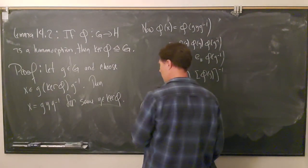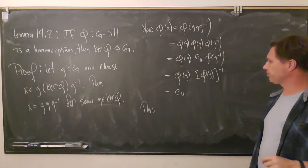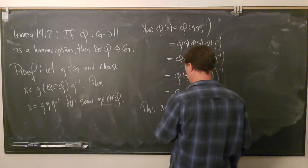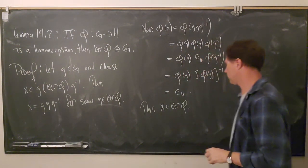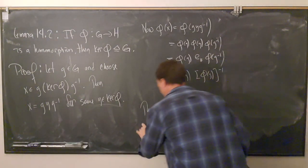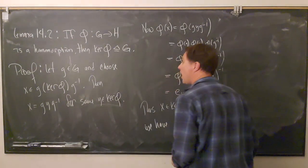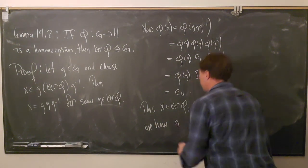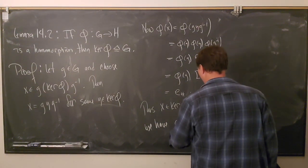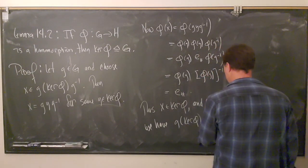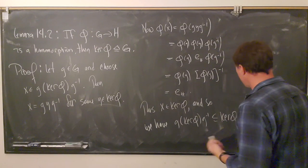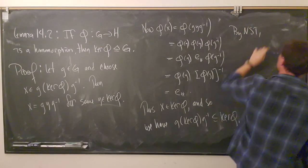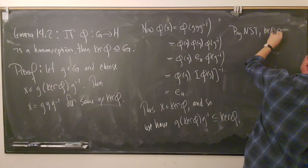We computed phi(x) and got the identity, which means x is an element of the kernel of phi. So we picked somebody in g·kernel(phi)·g⁻¹ and showed that it lives inside kernel(phi). We've shown containment: g·kernel(phi)·g⁻¹ is a subset of kernel(phi). By the normal subgroup test, the kernel of phi is a normal subgroup of G.